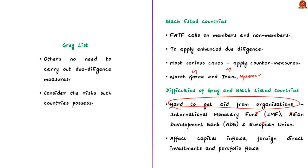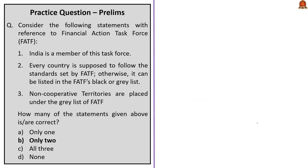Now let us solve the question. The first statement: India is a member of the task force — this is correct, as India became a member in 2010. The second statement: the mandate of the group is to deal with money laundering only — this is wrong, because we saw that the mandate varies from money laundering to terror financing to weapons of mass destruction. The third statement: non-cooperative territories are placed under the grey list of FATF — this is also wrong, because the technical name of the blacklist is 'non-cooperative territories.' So the correct option is option A.